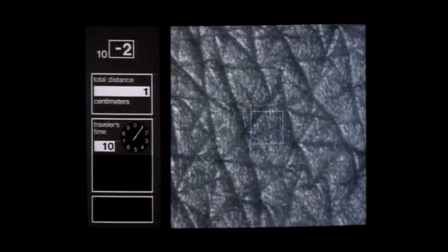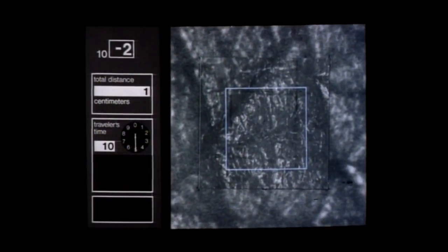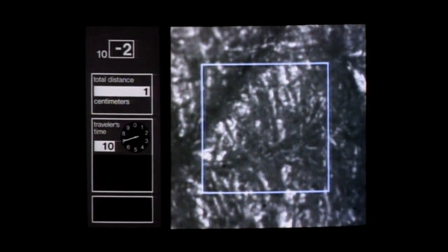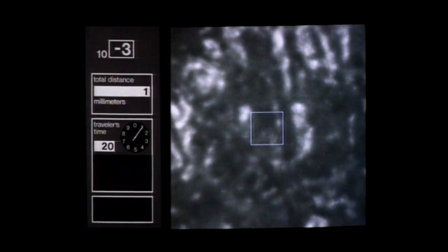10 to the minus 2 meters, 1 centimeter, coming in on 1 millimeter. The surface of the skin looks rough and furrowed. The outside layer contains dead cells which we constantly shed and replace from within.